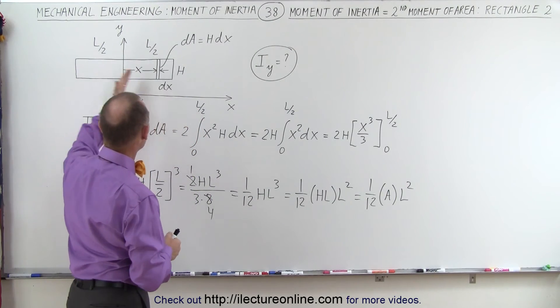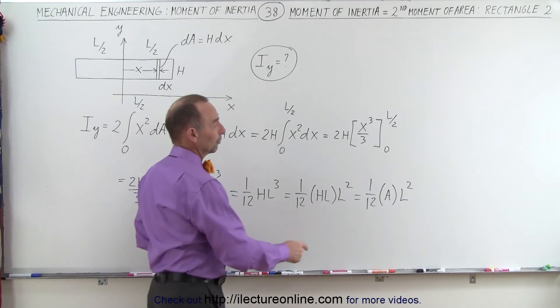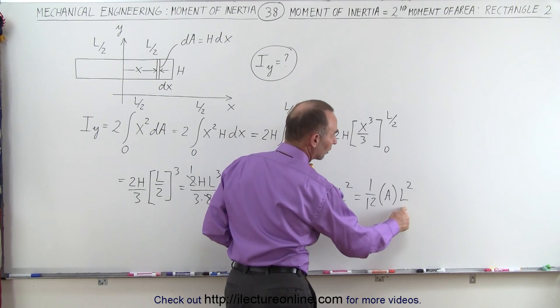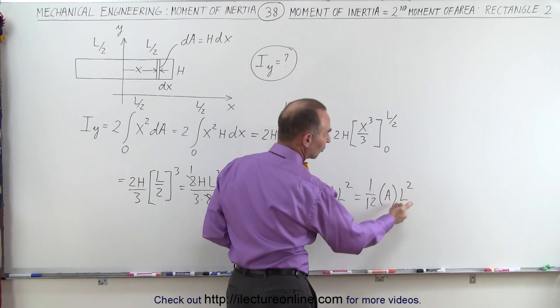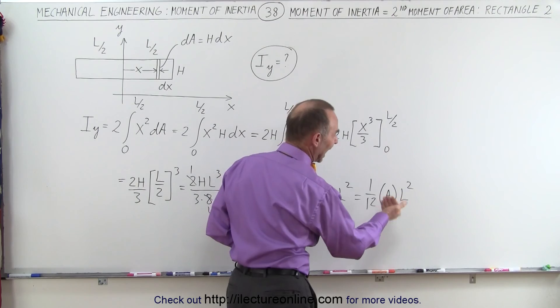And just like we did before, if we assume that this was an object that had mass, the moment of inertia would be 1/12th ML squared, but in this case, instead of using the mass, we use the area, so it's 1/12th AL squared.